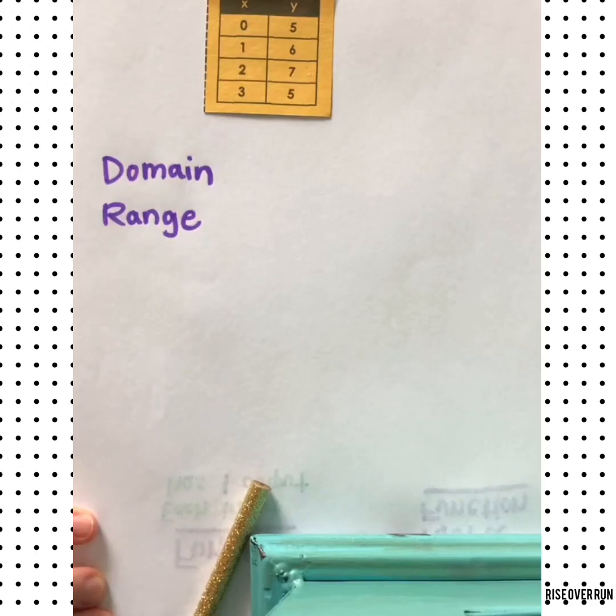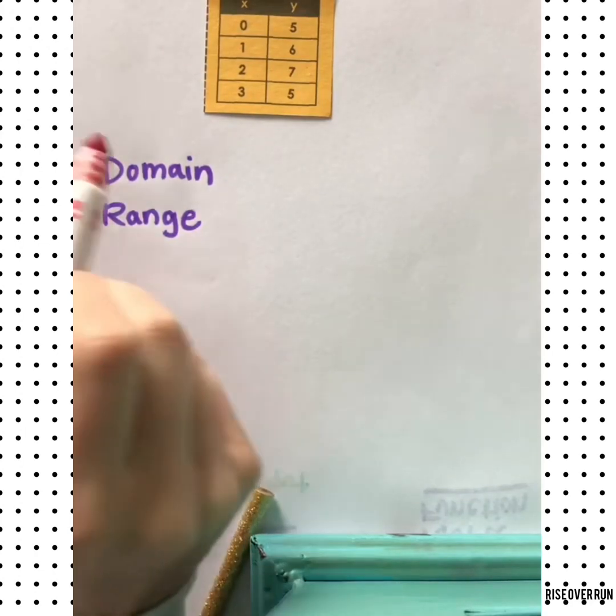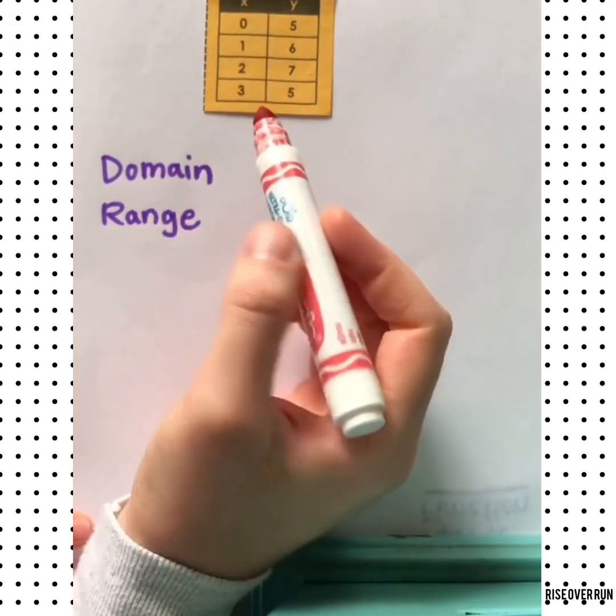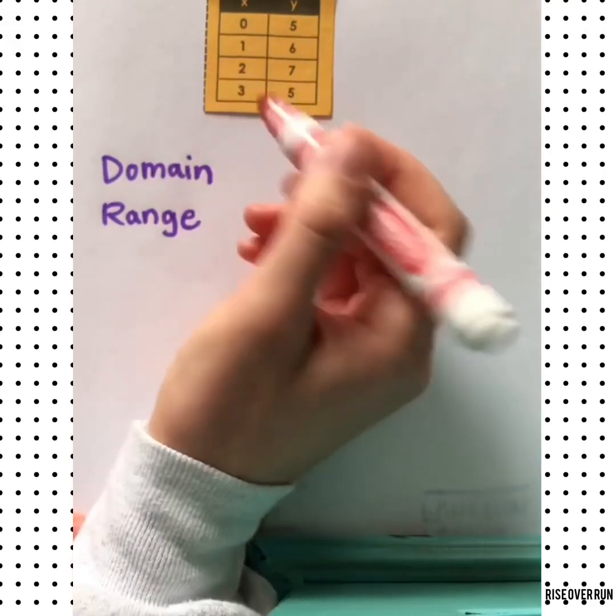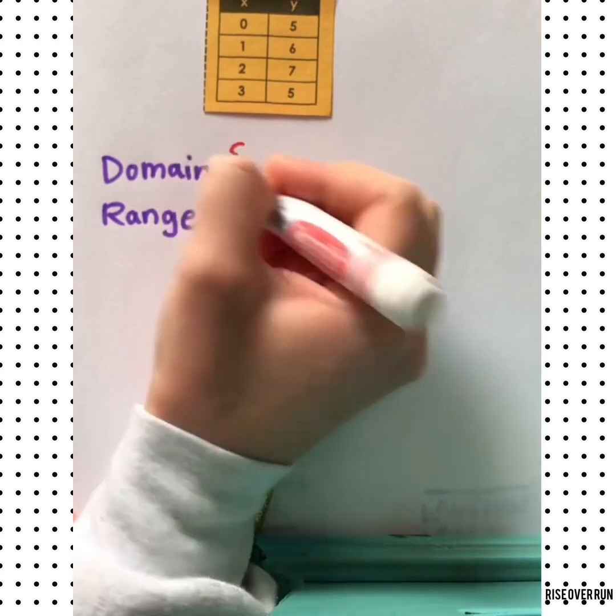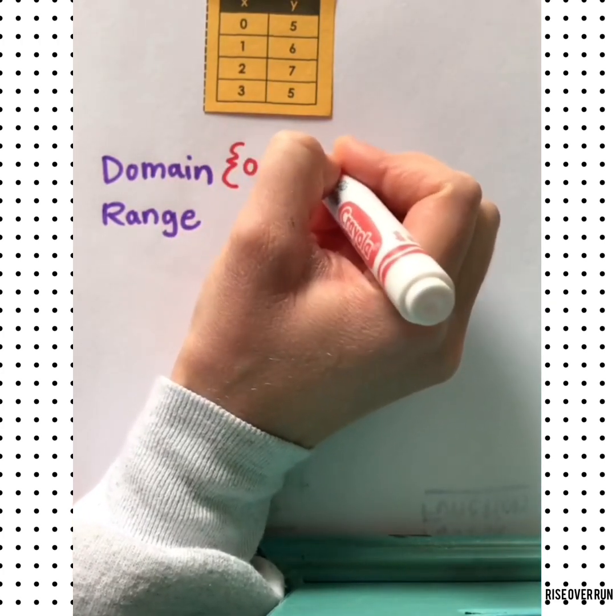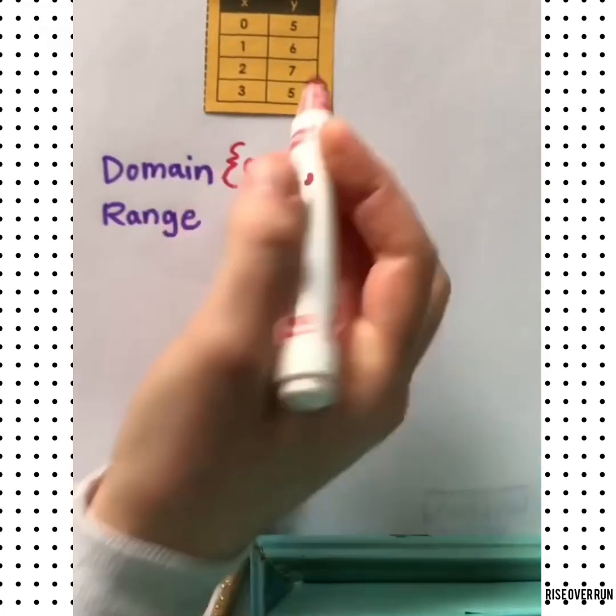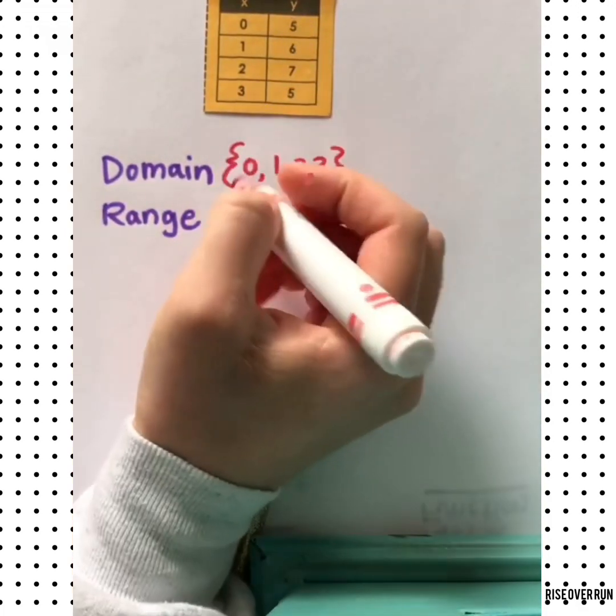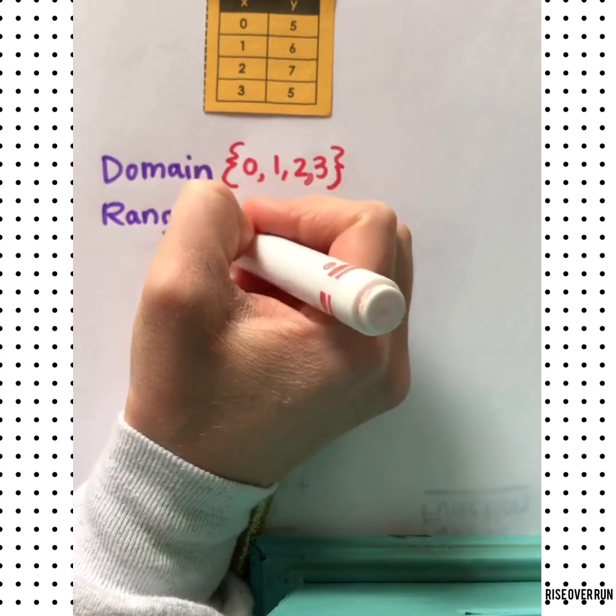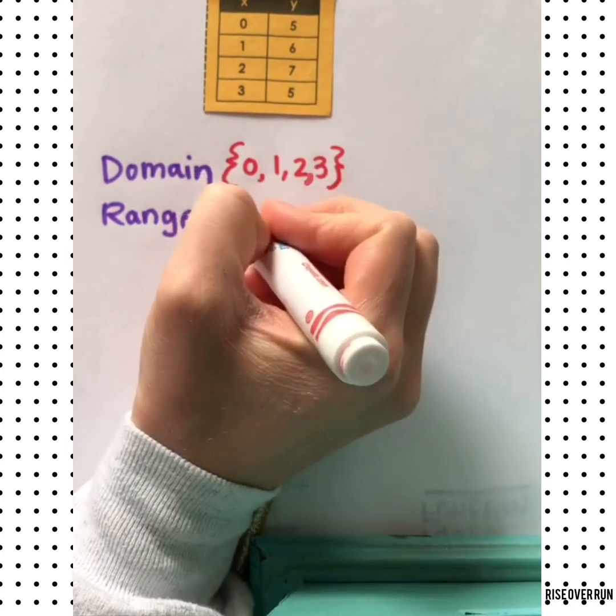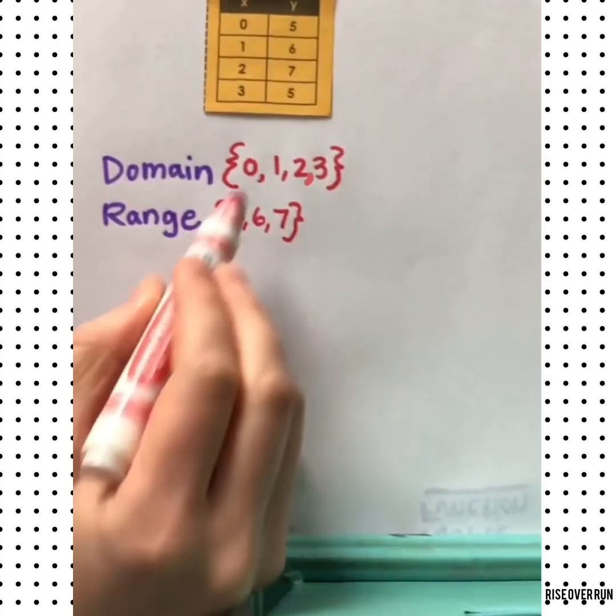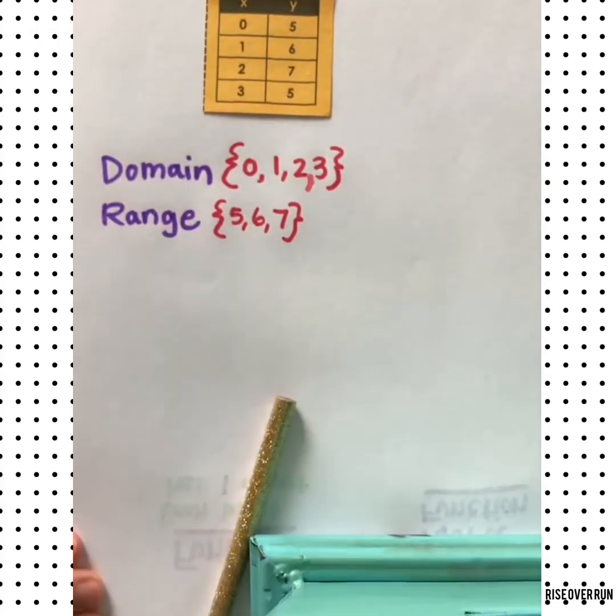Let's also talk about some vocabulary. The domain of a function means all the possible x values. So the domain of this function here. The range means all the possible y values or outputs. There's no need to list five again because it's already in the set.